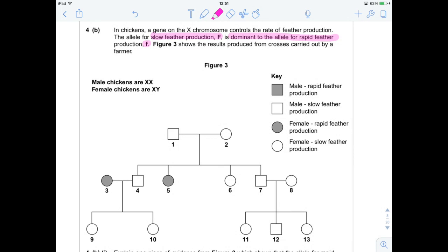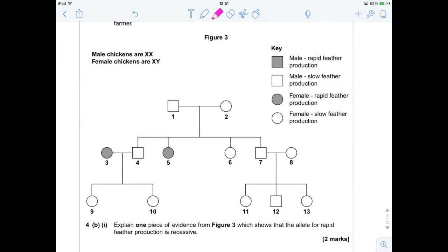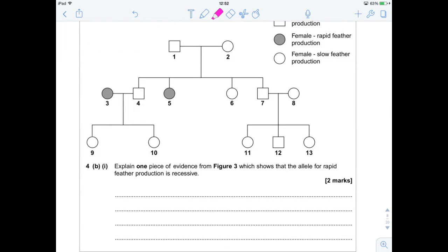Males are squares as always, females are circles as always, and if they are rapid feather producers they're going to be shaded, if they are slow they're going to be just white. We've got a nice handy reminder about the sex chromosomes here. Explain one piece of evidence from Figure 3 that shows the allele for rapid feather production is recessive. The one that screams out to me is, hey look,